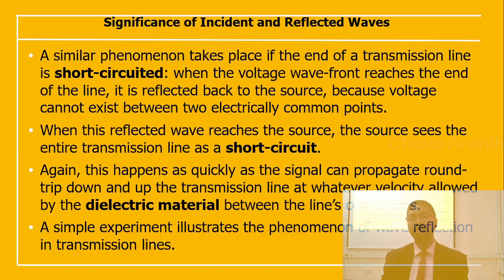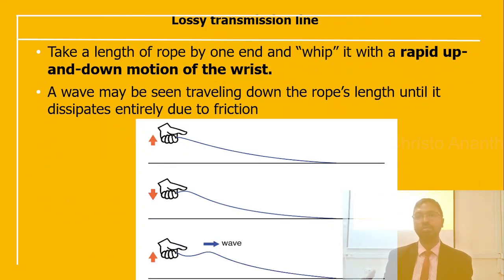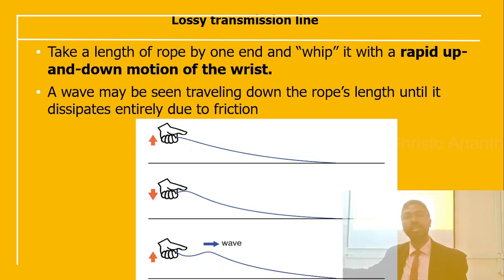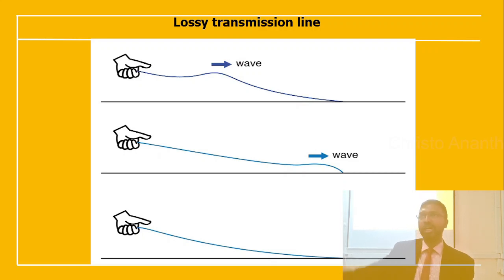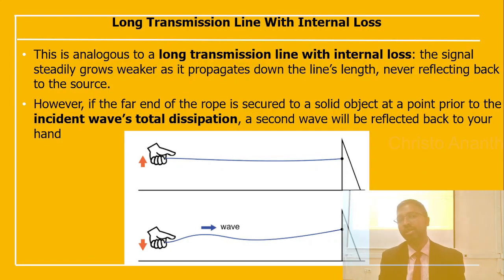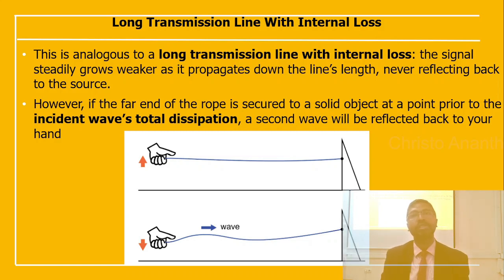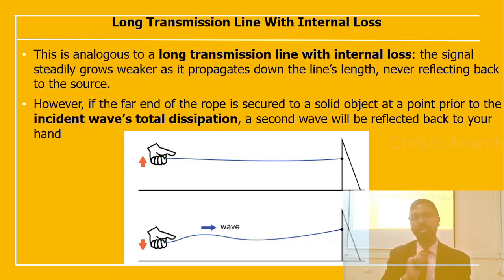To illustrate wave reflection, consider a long length of rope: hold one end and whip it with a rapid up-and-down motion. A wave can be seen traveling down the rope's length until it dissipates entirely due to friction. This is analogous to a lossy transmission line, where the signal grows weaker as it propagates down the line's length and never reflects back to the source.